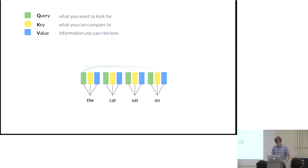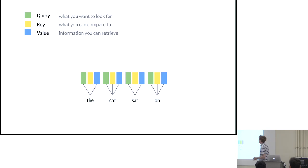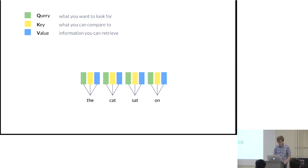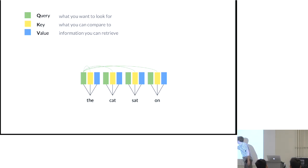A quick overview of attention: the standard formulation uses a query, a key, and a value. The query is conceptually what you want to look for, the key is what you compare against, and the value is the information you retrieve. You perform a combination operation — for example, given the word 'the'...